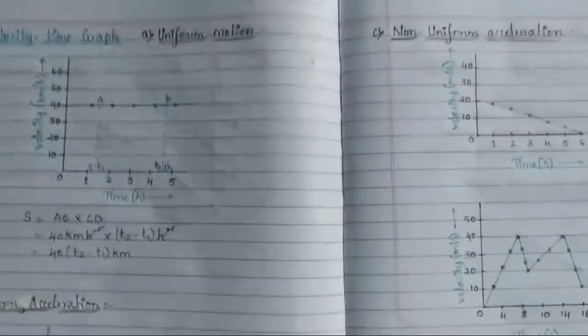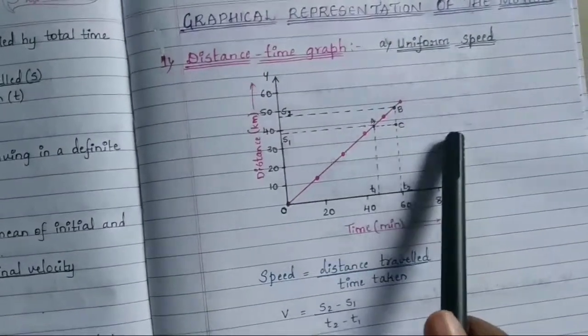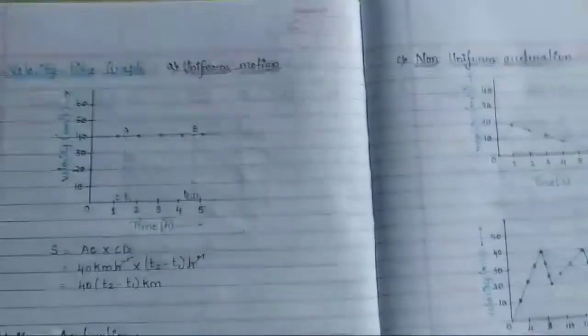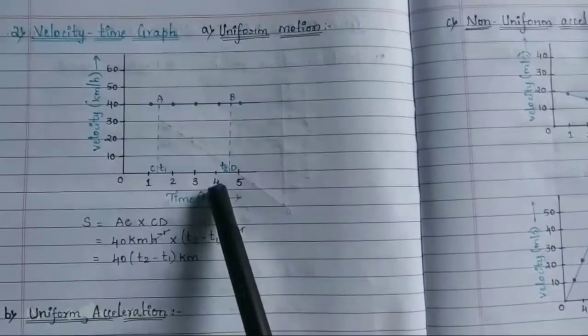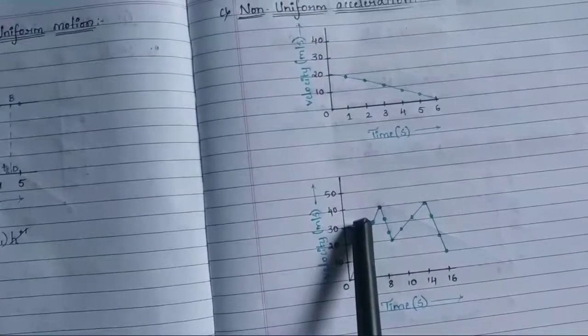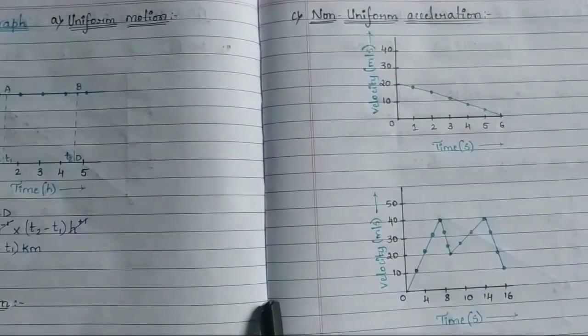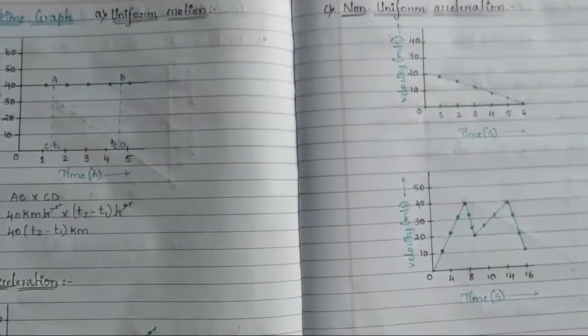I hope you have understood all these types. There are two types of graphs: the distance-time graph, in which we studied uniform speed and non-uniform speed; and the velocity-time graph, in which we studied uniform motion, uniform acceleration, and non-uniform acceleration. If you have any doubts, comment below, and please like, share, and subscribe to my channel. Thank you.